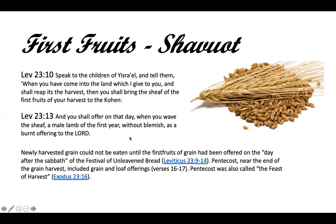Newly harvested grain could not be eaten until the first fruits had been offered on the day after the Sabbath of the Feast of Unleavened Bread. They would make matzah out of the old grain; you couldn't eat of the new grain until after harvest was declared. Pentecost, near the end of the grain harvest, included grain and loaf offerings and was also called the Feast of Harvest. There were two harvests — the first for cereals, the second for flour.